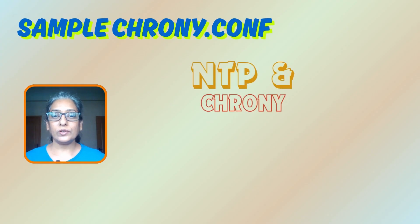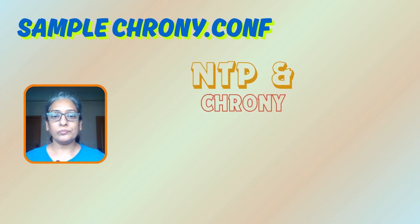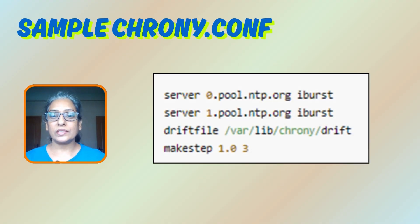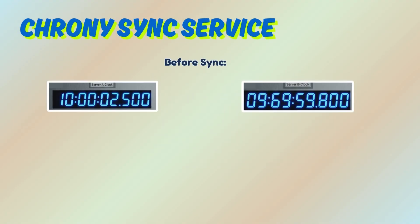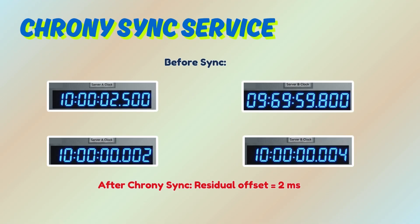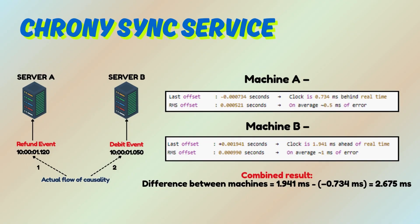But even with NTP and Chrony, you can't get perfect sync. Here is an extract of a Chrony configuration. Chrony keeps clocks very close, but it can't eliminate the last few milliseconds of drift and network delay. Even that tiny difference is enough to break event ordering — NTP reduces large skews, but network asymmetry and jitter mean small skews will remain.